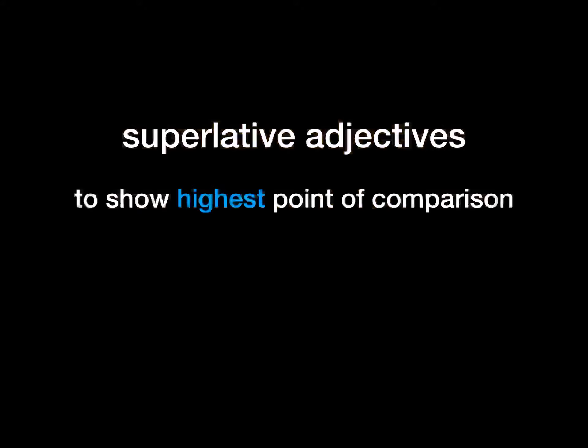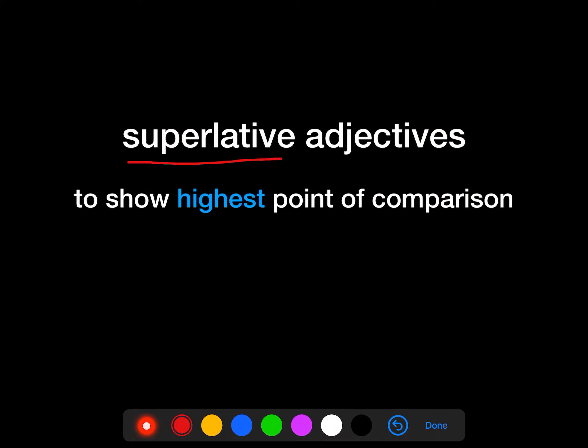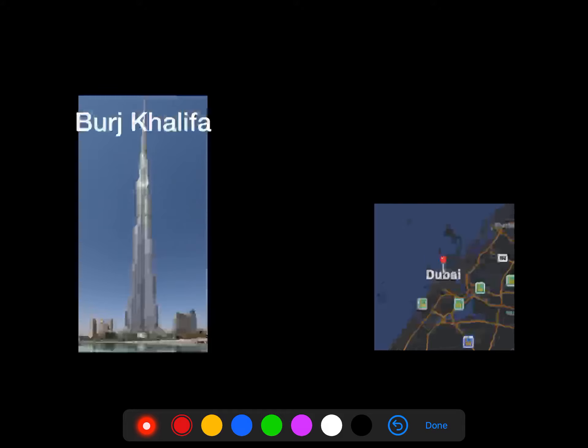Superlative adjectives are the adjectives that show the highest point of comparison. You can use superlative adjectives when you want to express the highest or very high degree of equality.